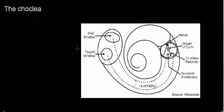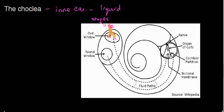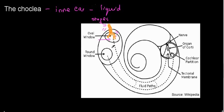So those are the two roles of the ossicles: mechanical advantage and impedance matching. Now let's talk about the cochlea, which is the inner ear. It's a liquid environment, coiled up like a snail shell. The oval window is the contact surface with the stapes — the last ossicle bone in contact with the inner ear. When the stapes is vibrating, the oval window vibrates along with it.